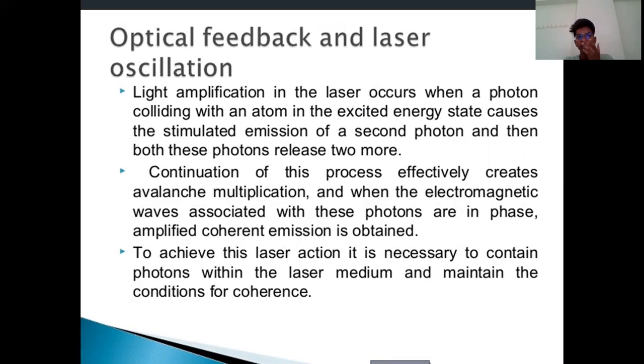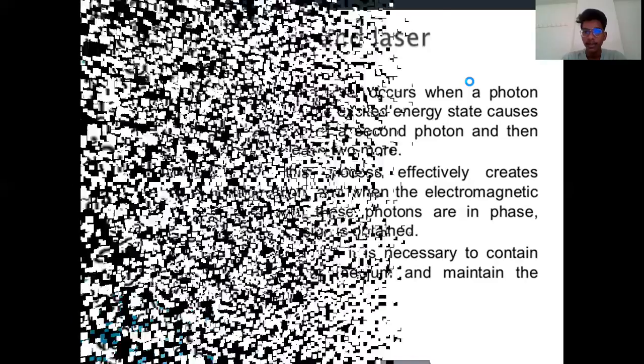Optical feedback and laser oscillation: Light amplification in a laser occurs when a photon colliding with an atom in excited energy state causes the stimulated emission of a second photon, and then both these photons release two more. In light amplification, when the photons collide with an atom, the excited energy state causes stimulated emission of a second photon and then both photons release more energy. The continuation of this process effectively creates avalanche multiplication. When the electromagnetic waves associated with these photons are in phase, amplified coherent emission is obtained. To achieve laser action, it is necessary to contain photons within the laser medium and maintain the conditions for coherence.